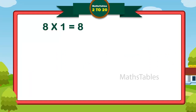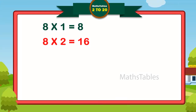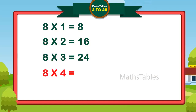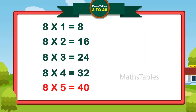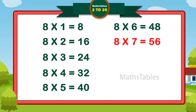8 ones are 8. 8 twos are 16. 8 threes are 24. 8 fours are 32. 8 fives are 40. 8 sixes are 48. 8 sevens are 56.